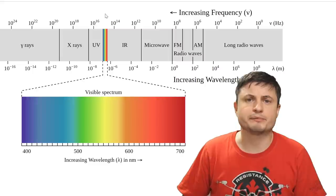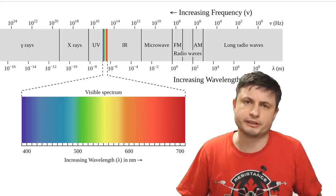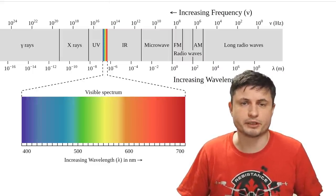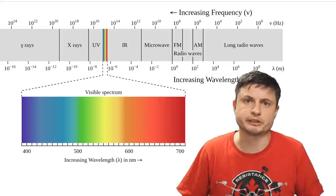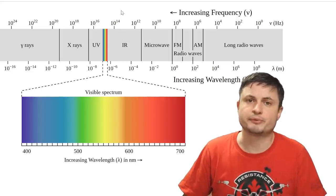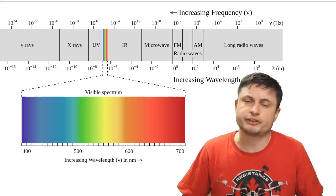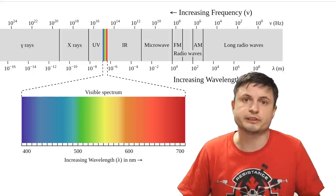Anything lower than that in wavelength becomes ultraviolet, and that's actually slightly more dangerous to life because it starts breaking up the cells themselves. But anything longer than that becomes infrared, and infrared just doesn't have enough energy for most of the life on the planet.